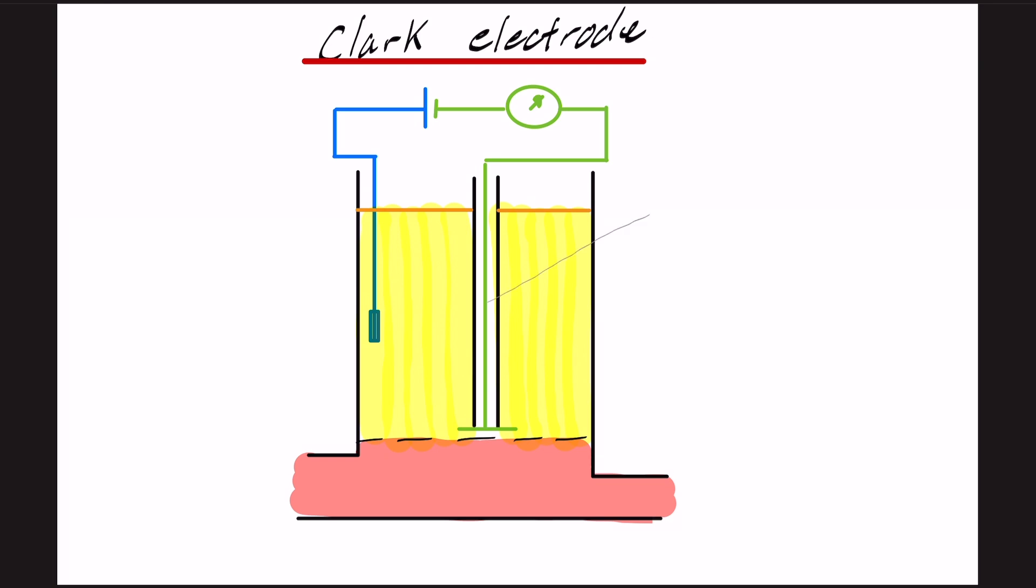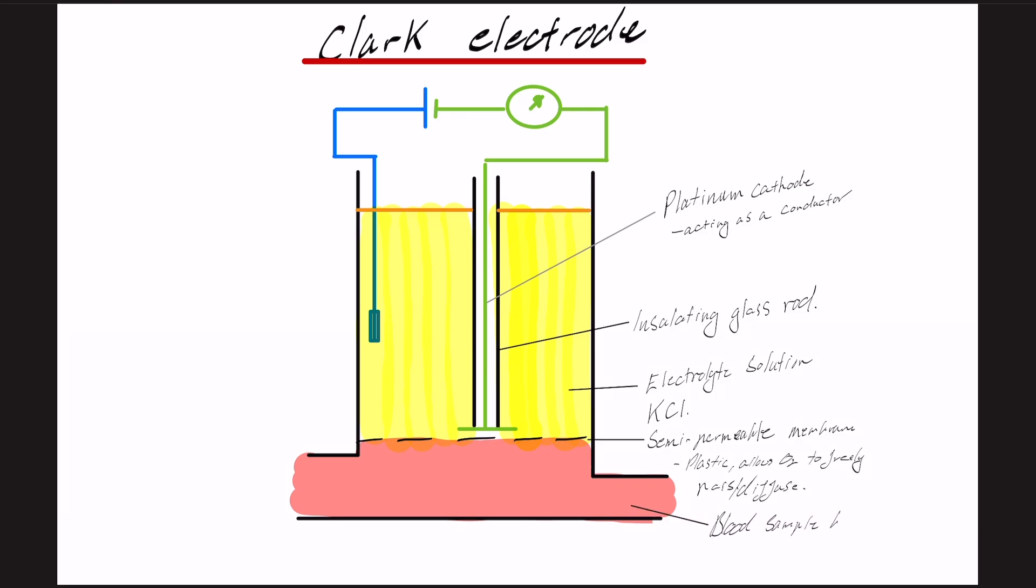So as I mentioned in green, this is our platinum cathode, and it's acting as a conductor. It's insulated by a glass rod, and it's surrounded by this electrolyte solution, which is usually potassium chloride. And there's a semi-permeable membrane. It's usually plastic or teflon, and only allows oxygen to freely pass through it or diffuse. And then our blood sample that's being measured in red here.